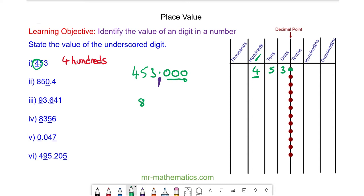For 850.4, again we line it up in our place value table. We can see the zero and the four are beyond the decimal point, and then we have a five and an eight. The value of the zero is in the units column, so this is zero units.